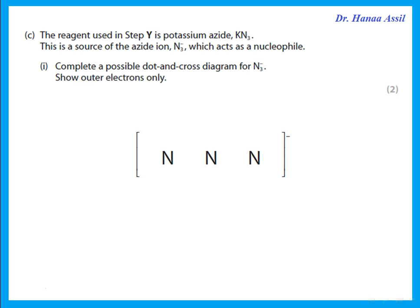The reagent in step Y is potassium azide (N₃⁻), a source of the azide ion acting as a nucleophile. Complete a dot-and-cross diagram for N₃⁻. Nitrogen is in group 5 and needs three electrons. The N₃⁻ ion has an extra electron. The nitrogen on the right shares three electrons with the middle nitrogen; the middle shares three with the right and two with the left; one end nitrogen carries the extra electron from the negative charge.